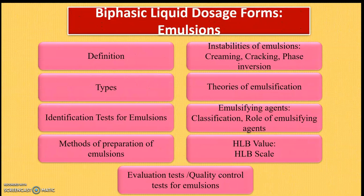The next chapter is Biphasic Liquid Dosage Forms — Emulsions. This is a very interesting and important chapter because you learn it in theory and also perform it in practicals. Important points include: definition of emulsion, types of emulsions, identification test for emulsions, methods of preparation of emulsions, instabilities of emulsions (creaming, cracking, phase inversion), theories of emulsification, classification of emulsifying agents and their role, and the HLB value and HLB scale. Finally, evaluation/quality control tests for emulsions.